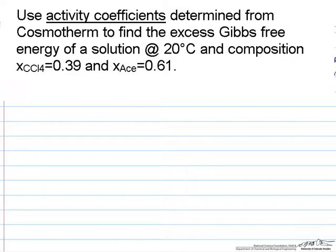In this problem you are asked to calculate the excess Gibbs free energy of a solution at 20 degrees C and composition given here of carbon tetrachloride of 0.39 and acetone of 0.61.